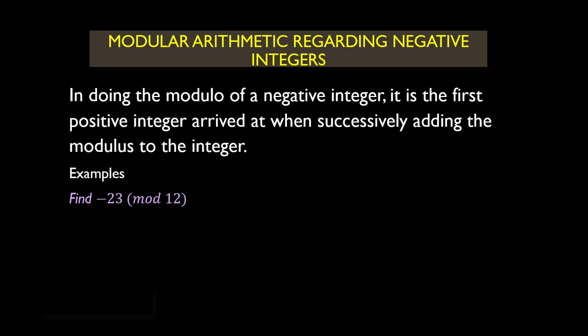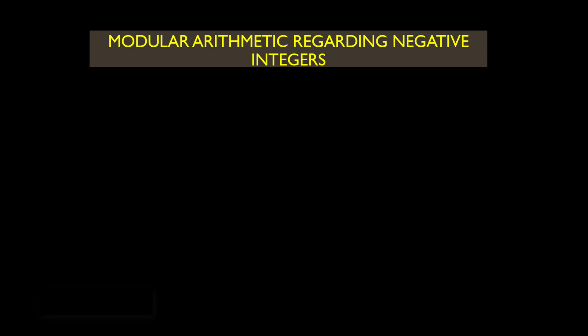For example, find negative 23 mod 12. What we do is successively add 12 to negative 23 until we arrive at the first positive integer. Negative 23 plus 12 gives negative 11, and then negative 11 plus 12 gives 1. So we can conclude that negative 23 mod 12 is simply equal to 1.